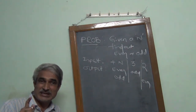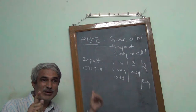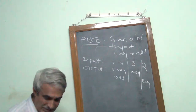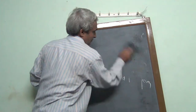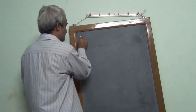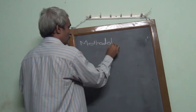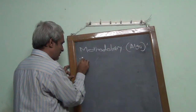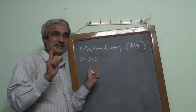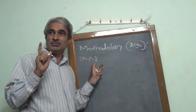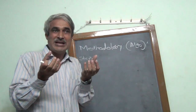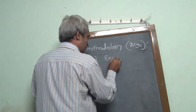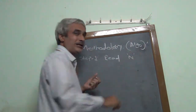What is the next part of our procedure? Methodology. We need to write a methodology. Within the methodology, we consider the algorithm. Step number 1: I need a number, so I read it — read number N. Then step number 2: check if it is even or odd. We compute X equal to N mod 2.